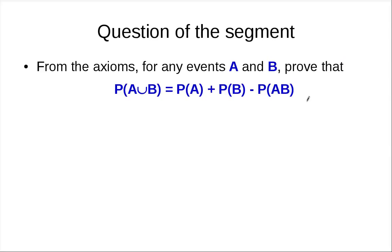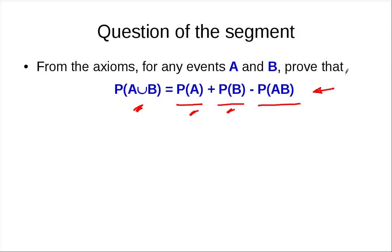The last question of this segment: from the axioms, can you prove that P(A union B) = P(A) + P(B) - P(AB)? This also answers the previous question: the condition under which P(A union B) equals P(A) + P(B) is when P(AB) = 0 — i.e., when A and B are mutually exclusive. The challenge for this segment is to prove the inclusion-exclusion formula. See you in the next clip.